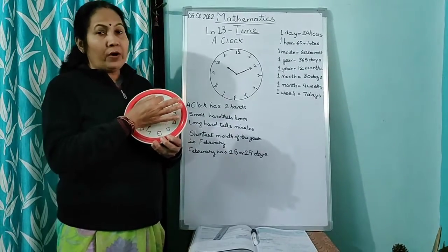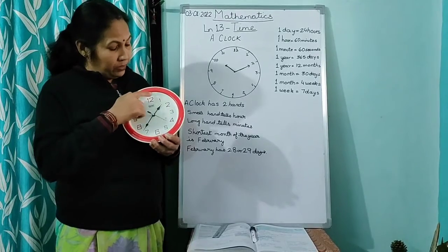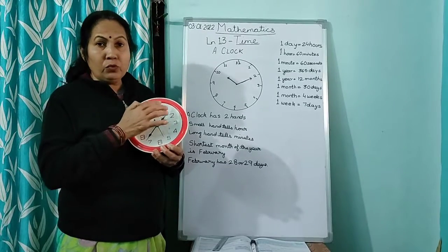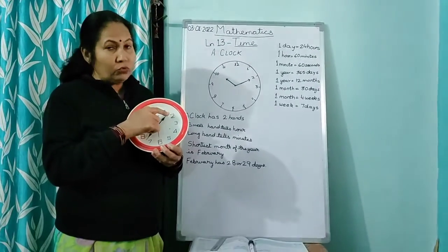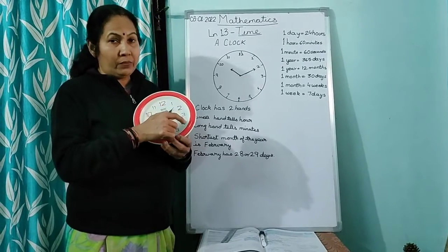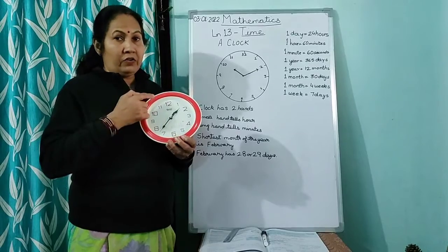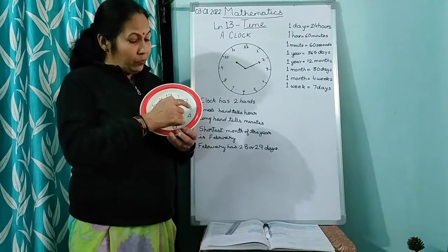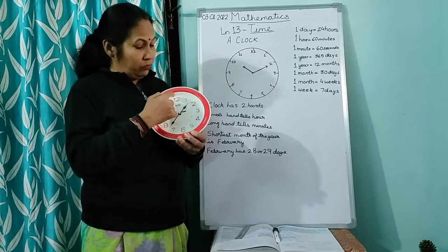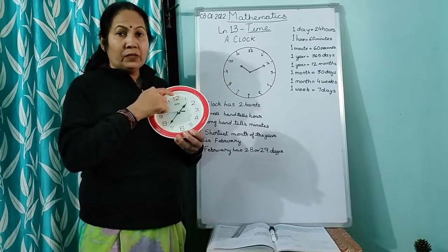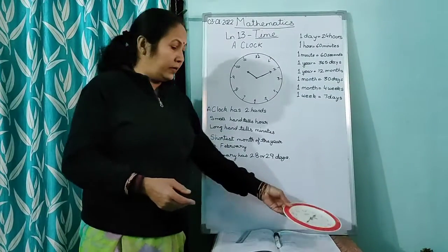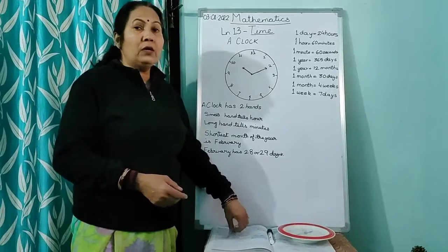From 12 to 1, you have 5 minutes. From 1 to 2, you have 5 minutes. From 2 to 3, you have 5 minutes. And so on. Now, when this clock takes 2 rounds, that is, once it takes from 12 to 12, then again it takes from 12 to 12, that is known as 1 day.